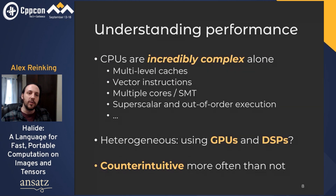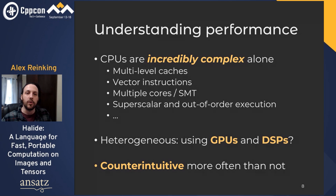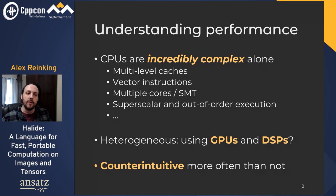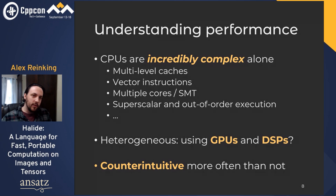Without even thinking about specialized accelerator hardware, think about your CPU — it is incredibly complex. To optimize your programs for it, you have to reason about multi-level caches, vector instructions, multiple cores, and the costs and benefits of hyper-threading. You have to think about superscalar and out-of-order execution, branch prediction, and more. If you throw a coprocessor into the mix, you also have to think about how to optimize communication between it and the CPU. Programmers — even experts — are notoriously bad at predicting performance. Half the time our optimization efforts do nothing, and the other half they make things worse.